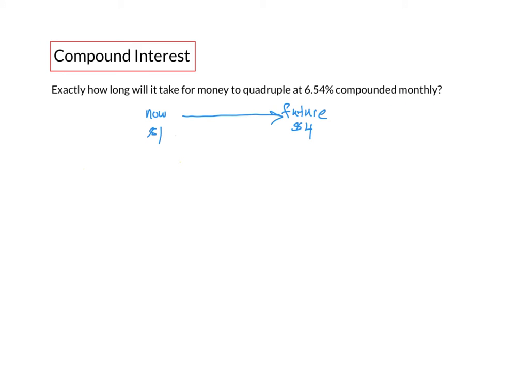So our dollar would be considered our present value and the $4 will be considered the future value. And in compound interest we know the relationship between present value and future value is given by the formula FV equals PV times 1 plus i to the n, where i is the periodic interest rate and n is the number of compounds.